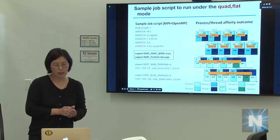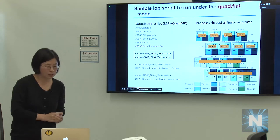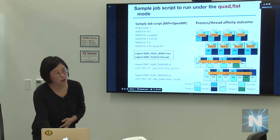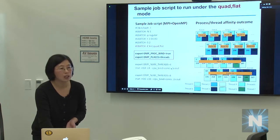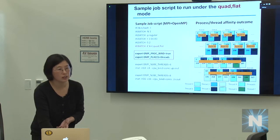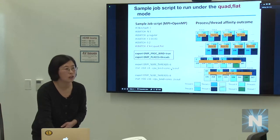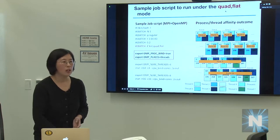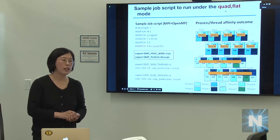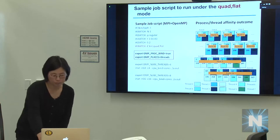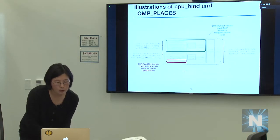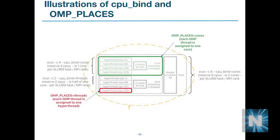To use MCDRAM in flat mode, simply add 'numactl -m 1' before your executable, or add '--mem-bind=prefer:map_mem:1' to the SRUN command. For quad flat mode, NUMA domain 1 is the MCDRAM.